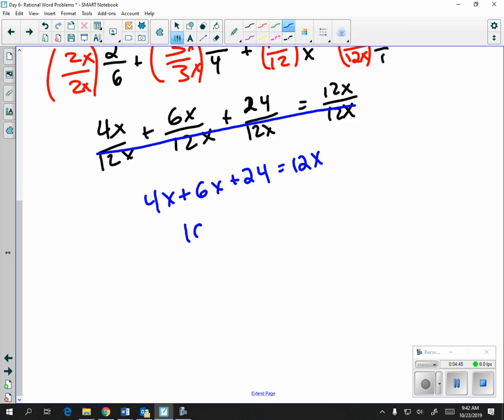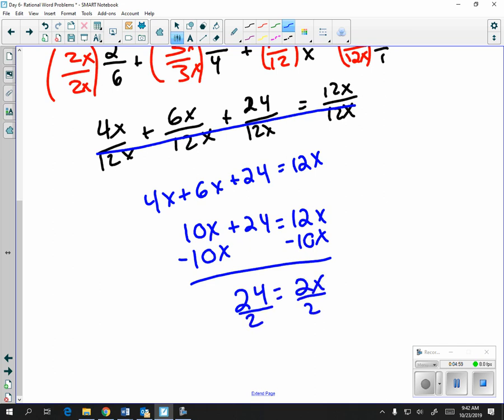So, combine like terms, 6x plus 24 equals 12x. We get 24 is equal to 2x, in which case it takes Gabriella 12 hours to paint her room on her own.